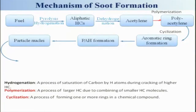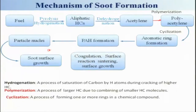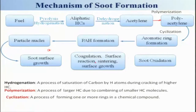Once the soot nuclei are formed, there will be some growth of the soot particle. Vapor will come, condense on the particle surface, and there will be surface growth. When these soot particles are present, they can come in contact, coagulate, join each other — there might be necking formation because of high temperature, sintering also. There will be surface reactions taking place in parallel. Various processes occur and different particle sizes result. The soot will then pass through a very high temperature zone.